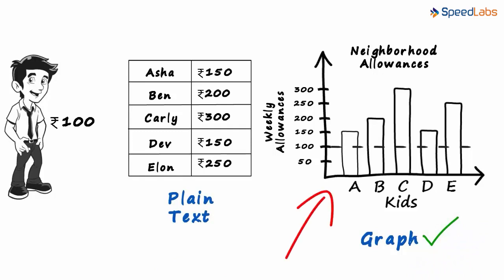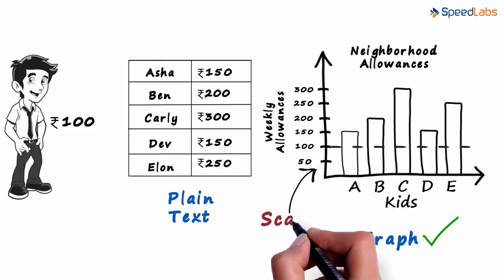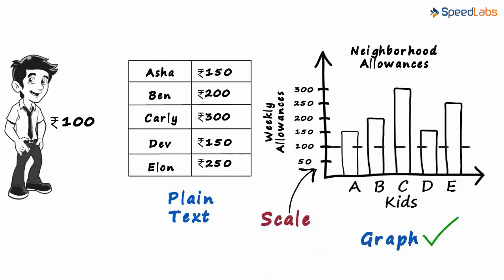In this graph, we have taken one unit as 50 rupees. So before making the graph, Zen had to think about the amount he has to allot to one unit. This is called the scale of the graph.